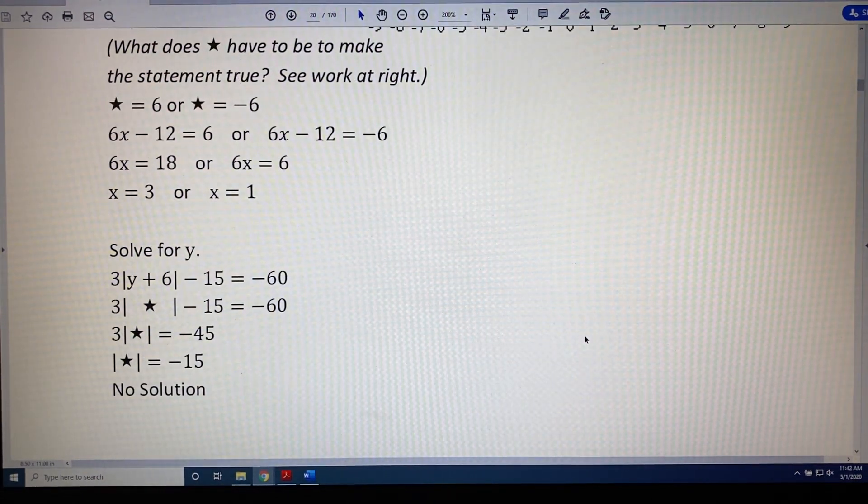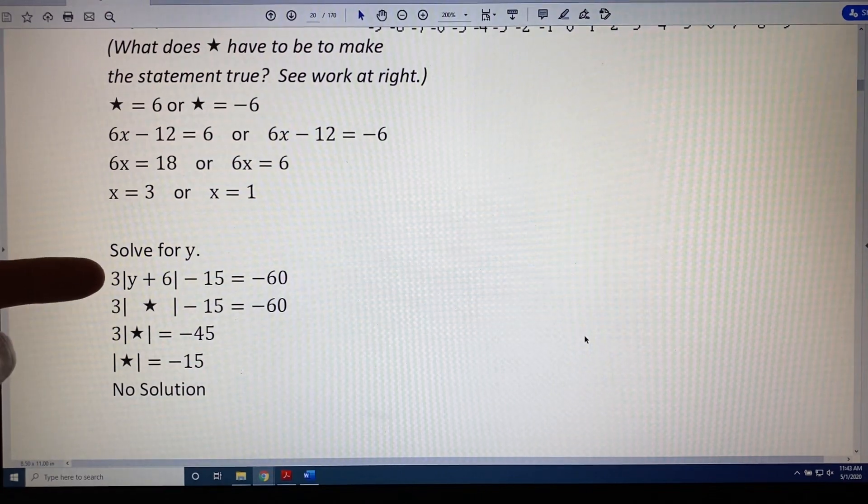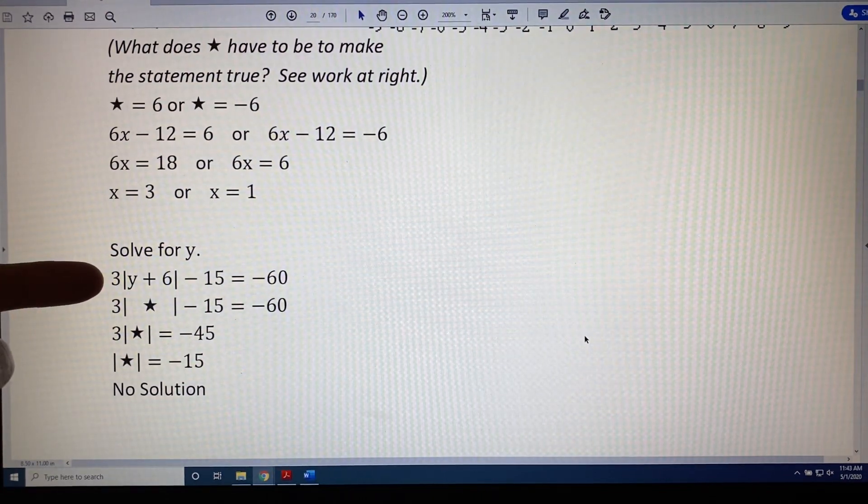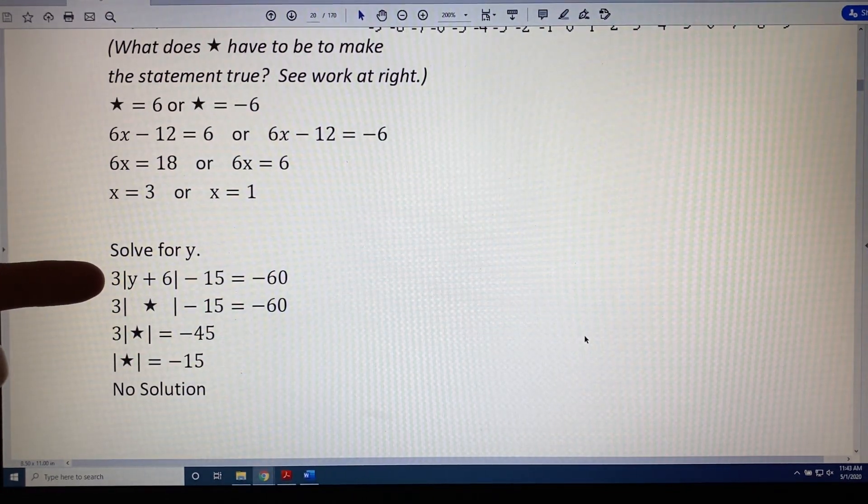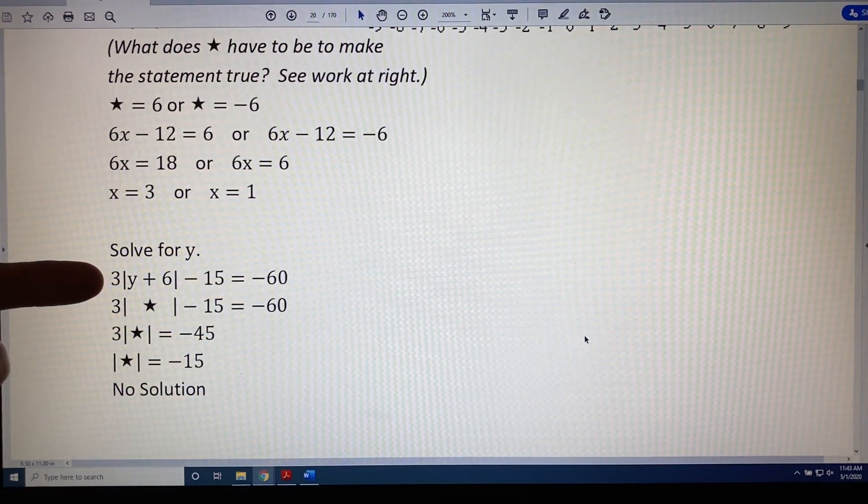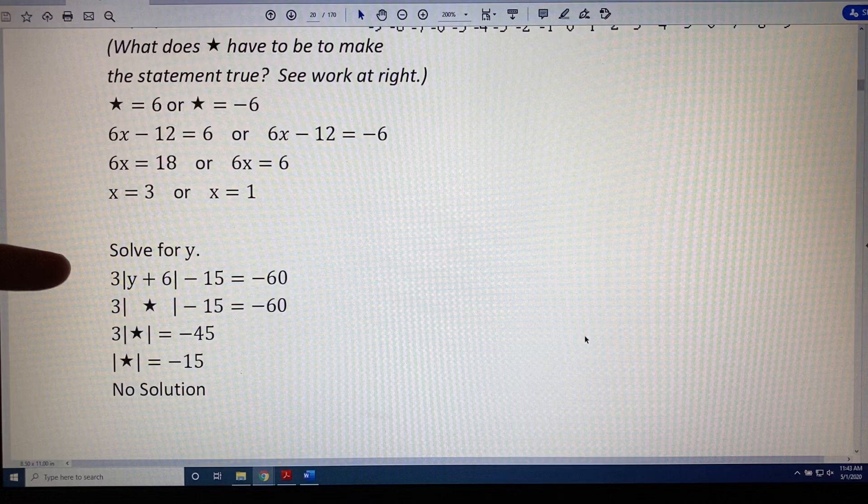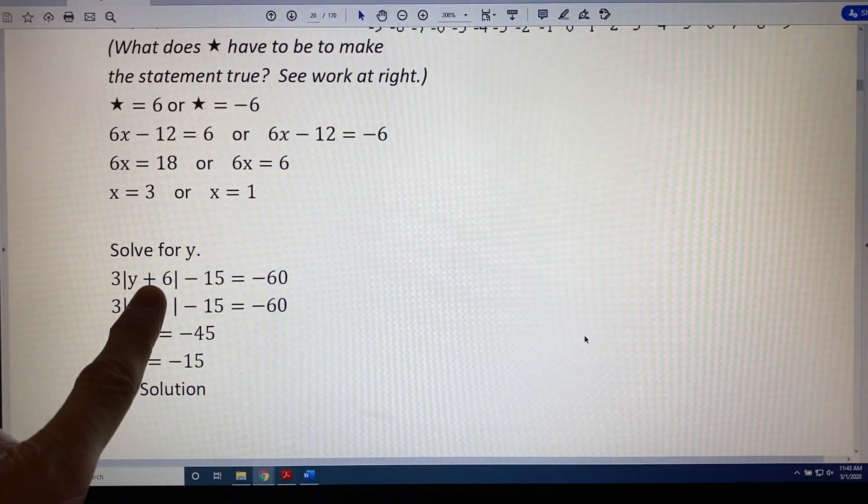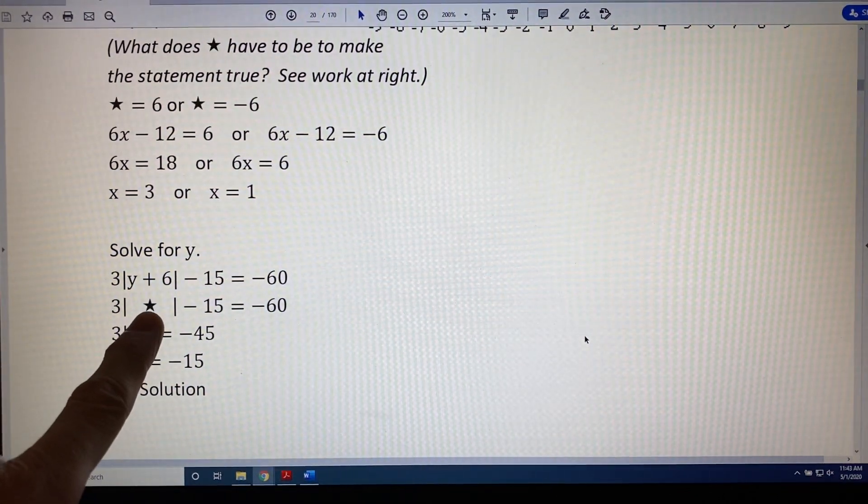Let's look at another example. Solve for y: 3 times the absolute value of y plus 6 minus 15 equals negative 60. Let's go through the steps just like we did in the previous problem. First, replace the expression inside the absolute value bars with star.